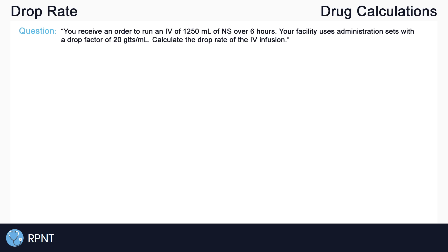You receive an order to run an IV of 1250 mL of normal saline over six hours. Your facility uses administration sets with a drop factor of 20 drops per mL. Calculate the drop rate of the infusion. Remember that GTTS is just the abbreviation for drops.